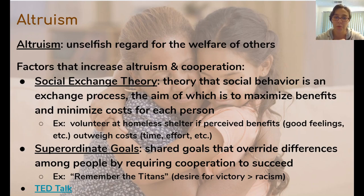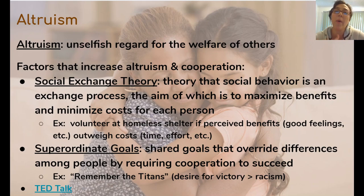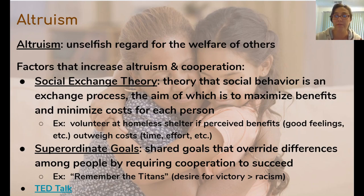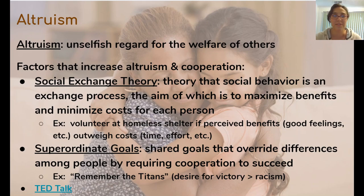For example, if I volunteer at a homeless shelter, it's because I think the benefit — feeling good about myself — outweighs the cost of my time and effort. If the benefit outweighs the cost, I create an exchange where I help society and society helps me. The other theory involves superordinate goals — goals held by the whole group or society that override individual differences. 'Superordinate' means above the level of the individual self, as opposed to subordinate, which is below.